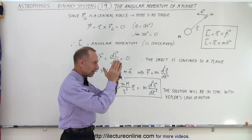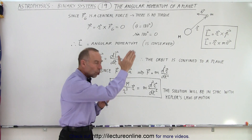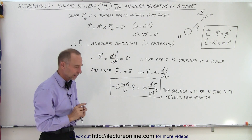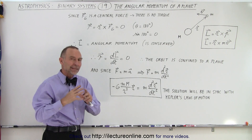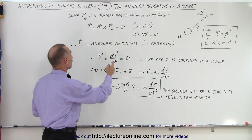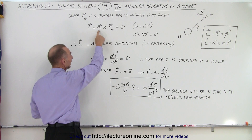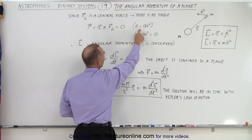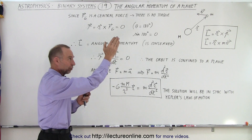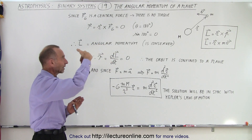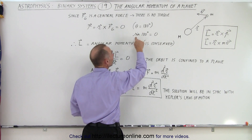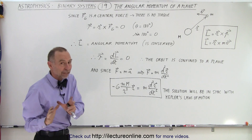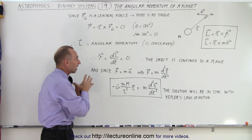Since the force between the planet and the sun is directed always along the position vector, it is called a central force. There is no torque on the planet, which means there cannot be any change in the angular momentum of the planet. The torque equals the cross product of the position vector and the central gravitational force. Since they are 180 degrees apart — the position vector points one direction and the gravitational force points in exactly the opposite direction — the sine of 180 degrees is zero, so that cross product equals zero. Therefore there is no torque on the planet, and the angular momentum of the planet must be conserved.